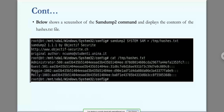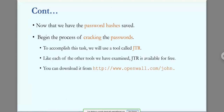Now that we have the password hashes saved in the hashes.txt file, we begin the process of cracking the passwords using John the Ripper. We need to understand how Microsoft creates these password hashes in order to select the appropriate algorithm for decrypting them.